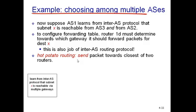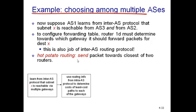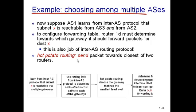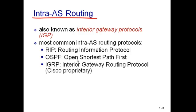The steps of hot potato routing are: first, learn from the inter-autonomous-system protocol that subnet X is reachable via multiple gateways. Then use intra-autonomous-system routing info to determine the cost of the least-cost path to each gateway. Next, use hot potato routing to choose the gateway with the smallest least-cost path. Finally, determine from the forwarding table the interface L that leads to the least-cost gateway, and enter destination X with interface L in the forwarding table.